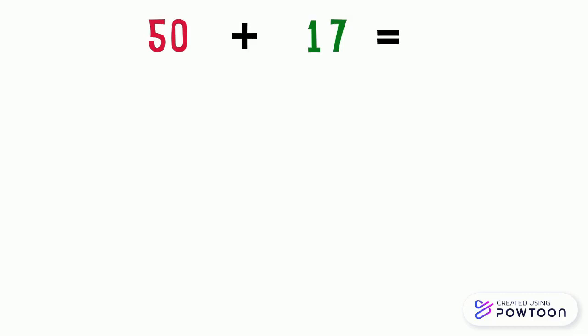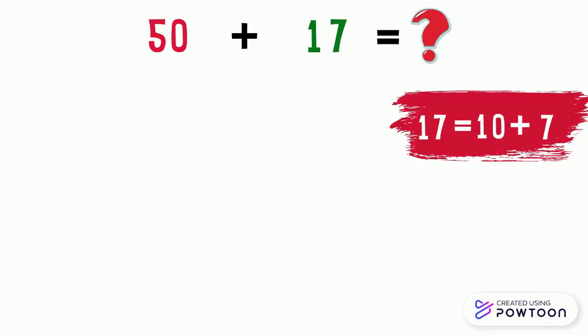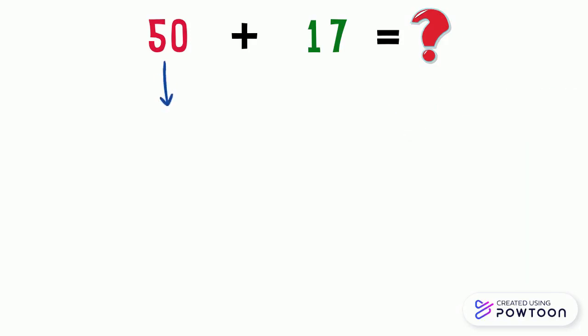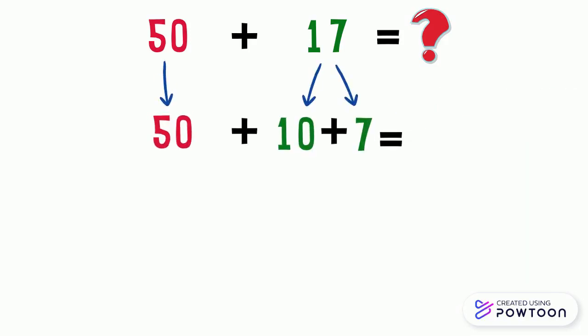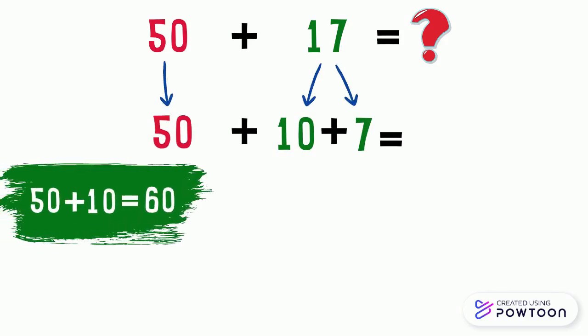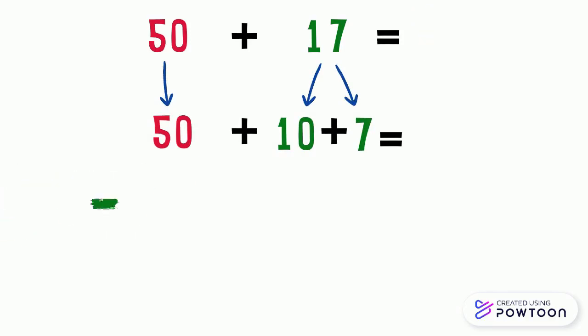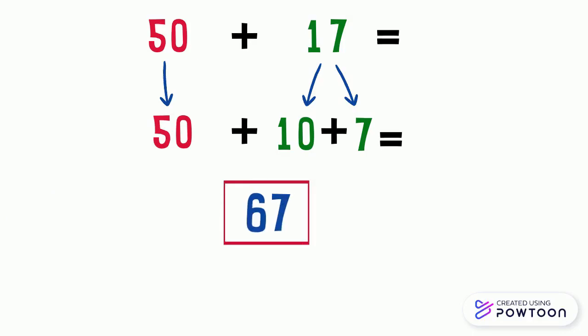Now, let's add 50 and 17 by doing a very simple calculation. We know that the number 17 is equal to 10 plus 7. So, 50 plus 17 is 50 plus 10 plus 7. We know that 50 plus 10 equals 60. Then add 7, so it is equal to 67.